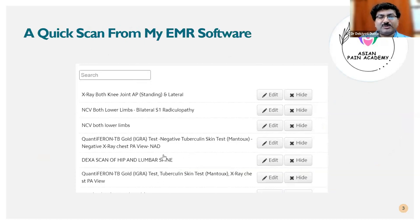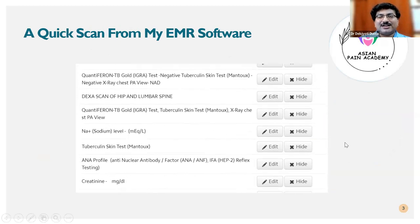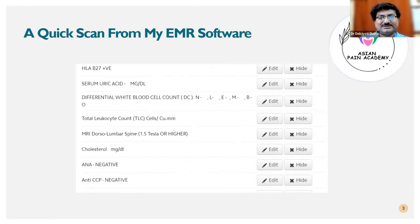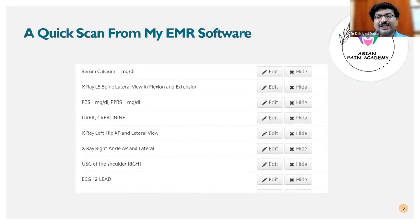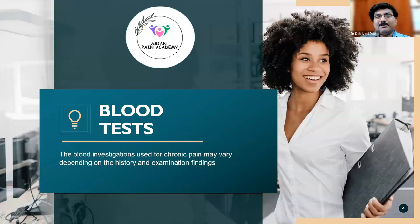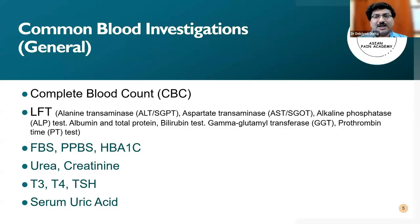What are the investigations we commonly prescribe? I went through my EMR software and these are the investigations I commonly write for my patients — it is a big list. Starting with blood tests: first is a complete blood count. It can give you the idea of hemoglobin status, especially if the patient is having rheumatoid arthritis and is on drugs — they might have low hemoglobin. There are also associated nutritional deficiencies that might reduce it.